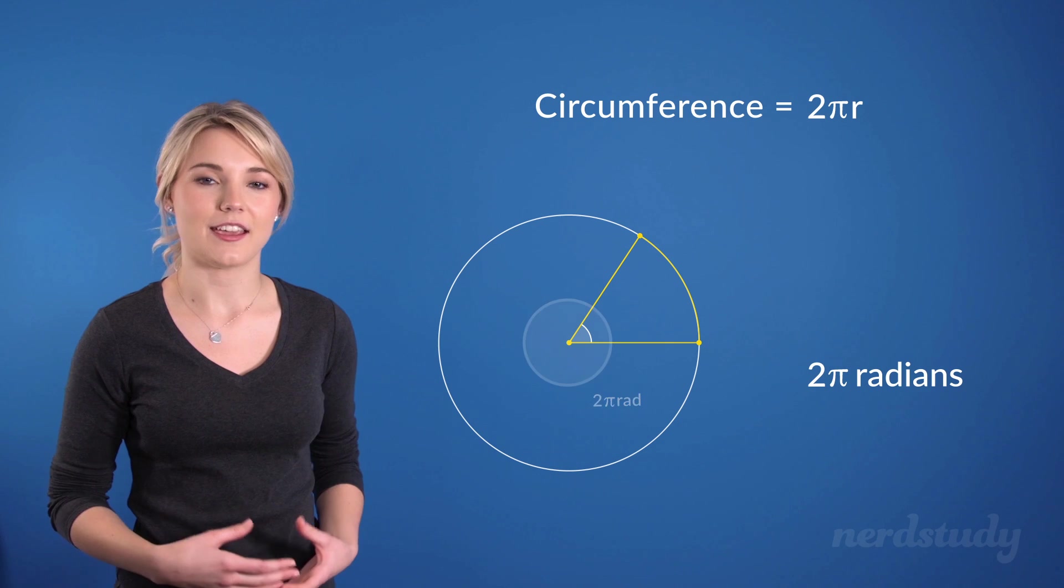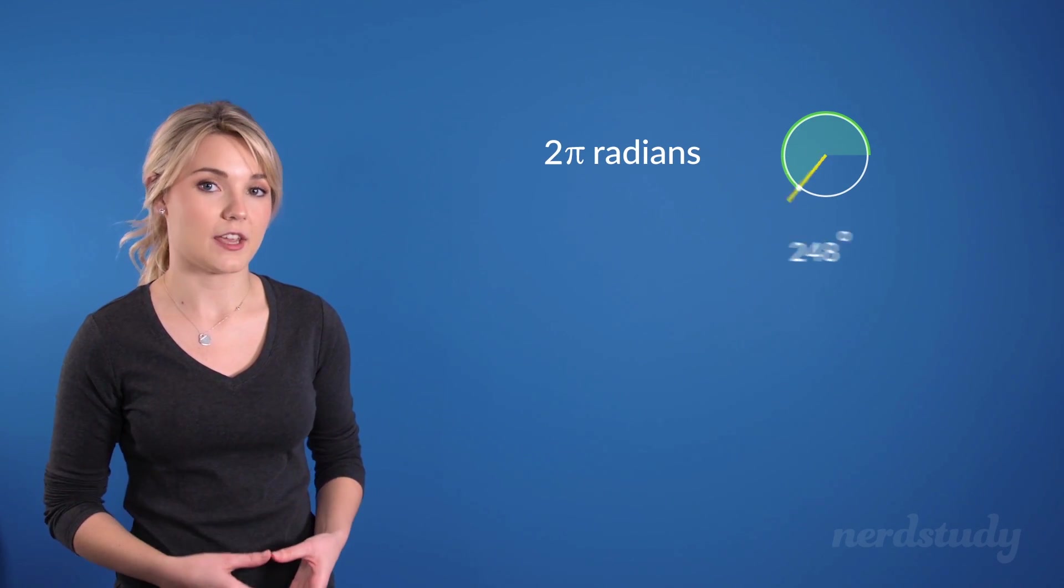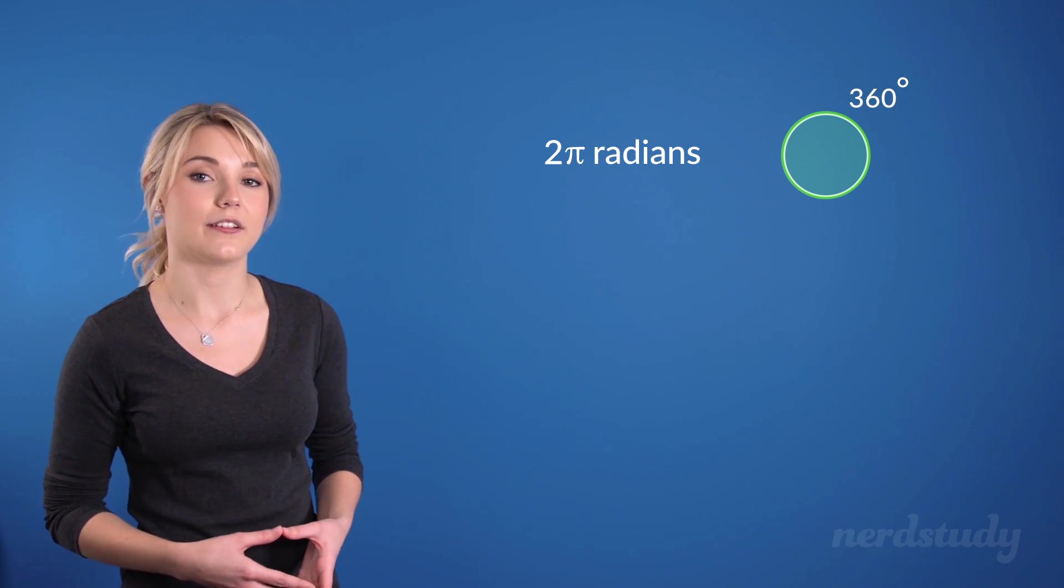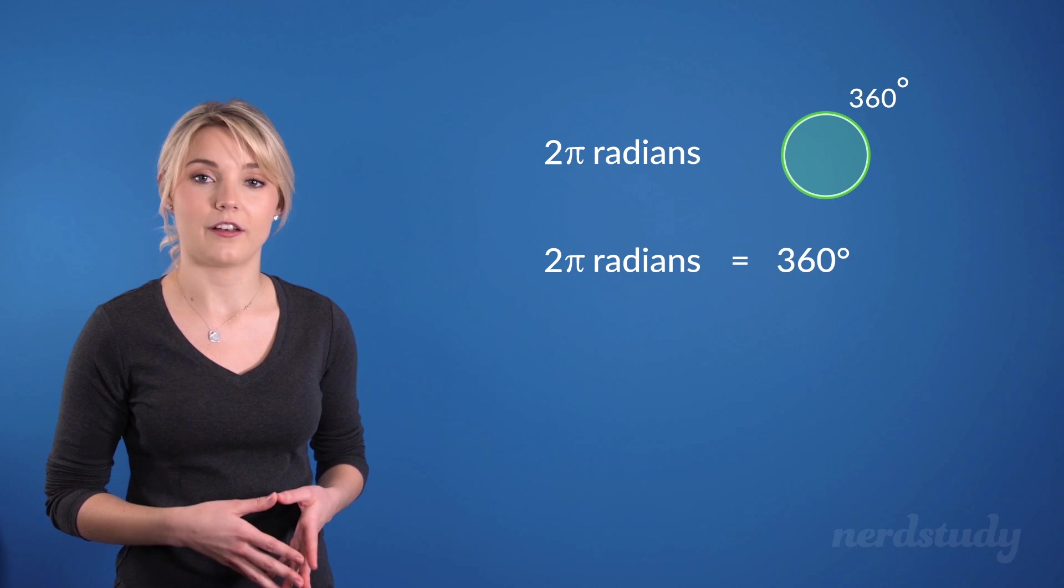So what we are saying essentially is this then. Since 2 pi radians is 1 full rotation, and since 1 full rotation is 360 degrees, then 2 pi radians is equal to 360 degrees.